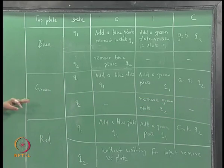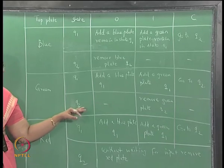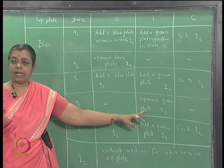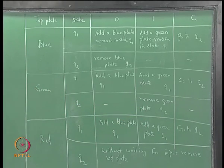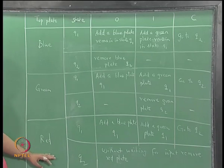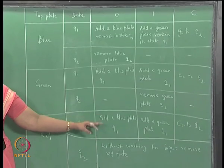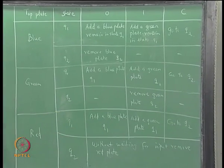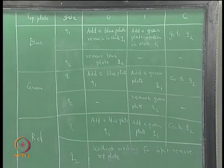If the top plate is green and you are in state q2, you are not supposed to get a 0. If you get a 1, remove the green plate and remain in state q2. If you have a red plate on the top and you are in q1: if you see a 0, add a blue plate; if you see a 1, add a green plate; if you see a c, go to state q2. So the action is given in this table.